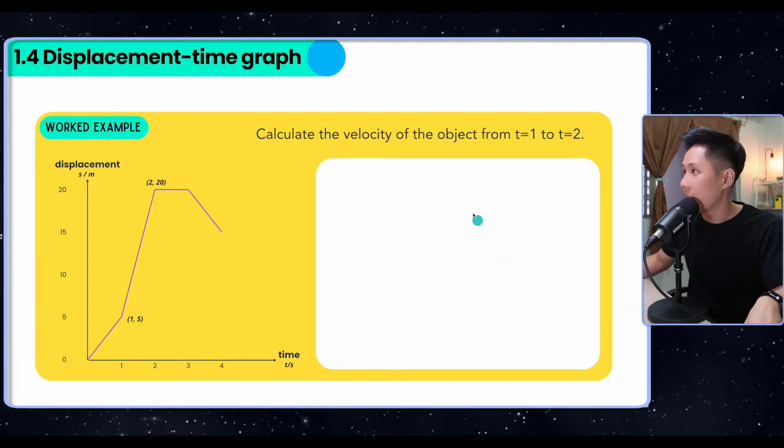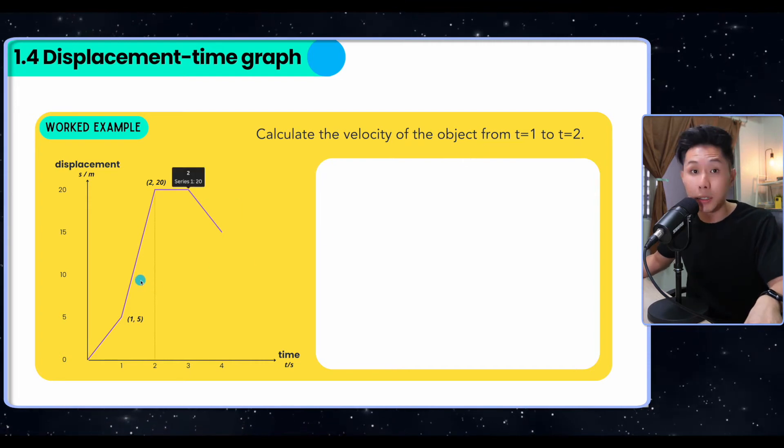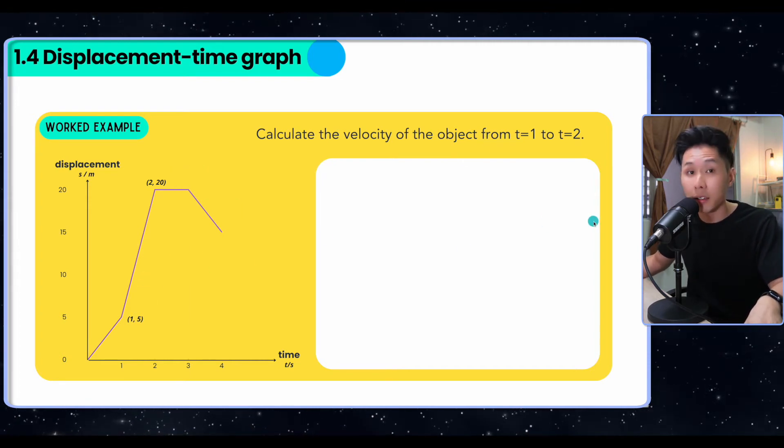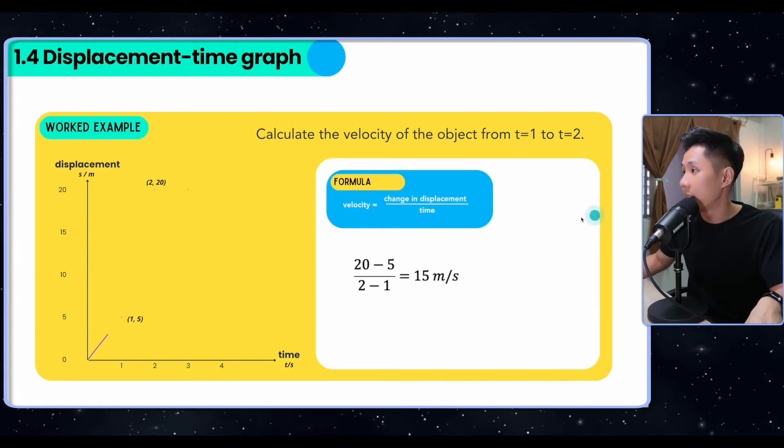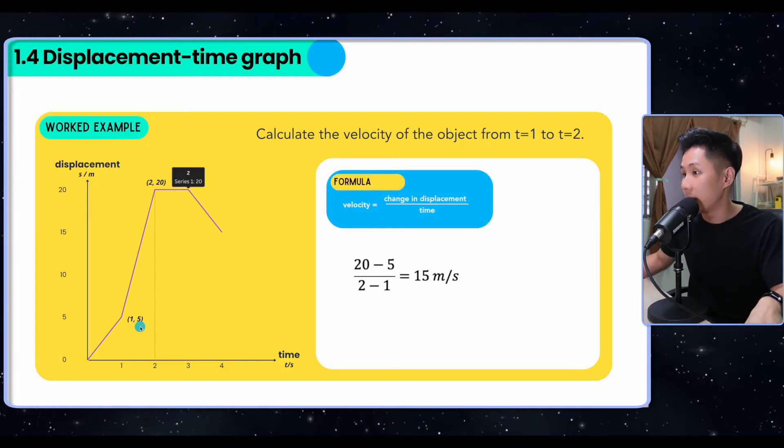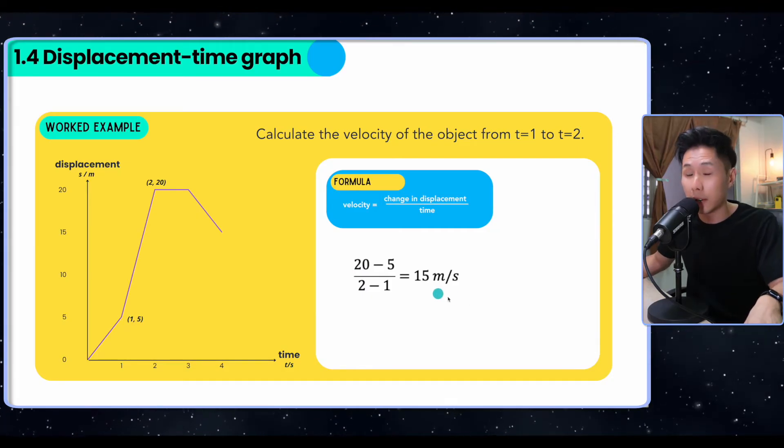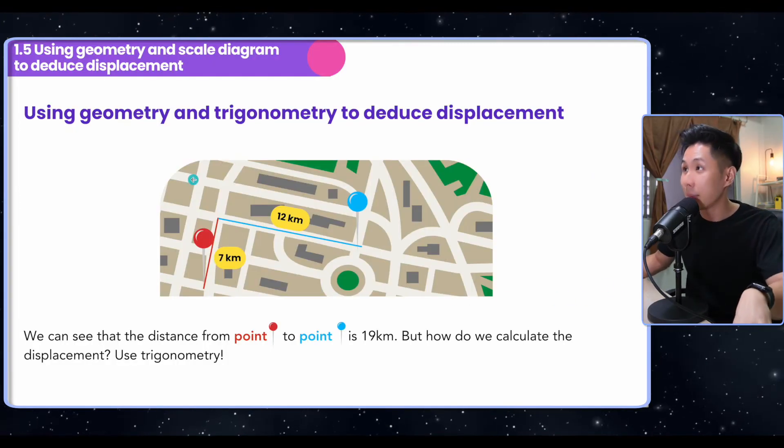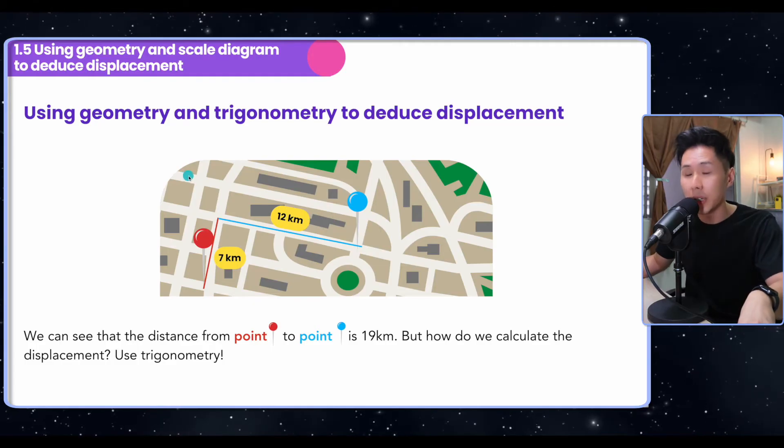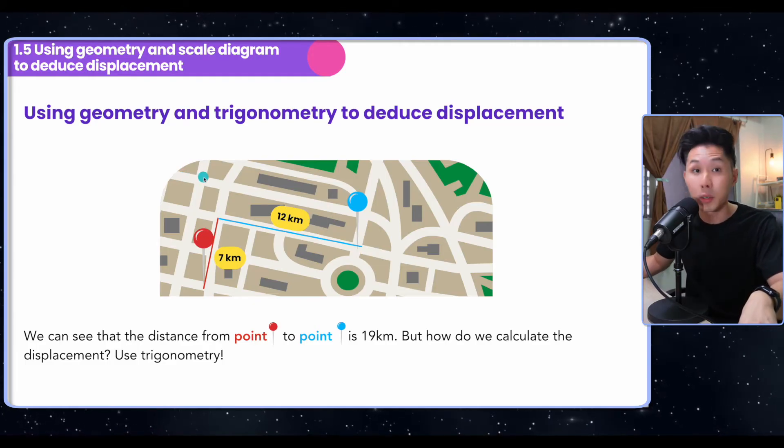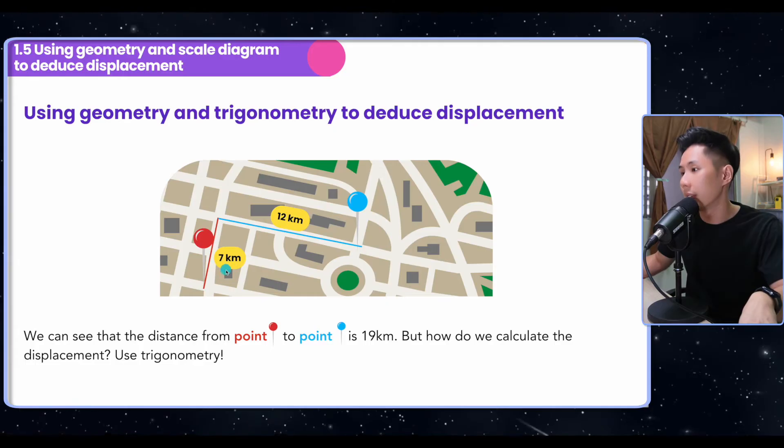Now let's have some questions. Calculate the velocity of the object from t equals 1 to t equals 2. To do that, we can just calculate the gradient of that part of the graph. This is what I will do: 20 minus 5, divided by 2 minus 1, which will give me the velocity of the object from that time. Great.